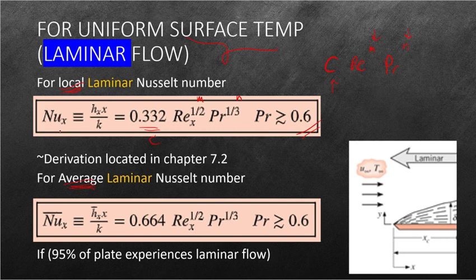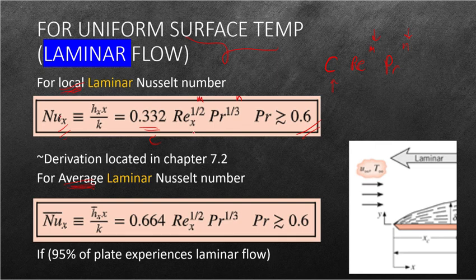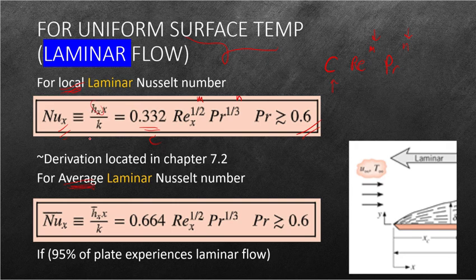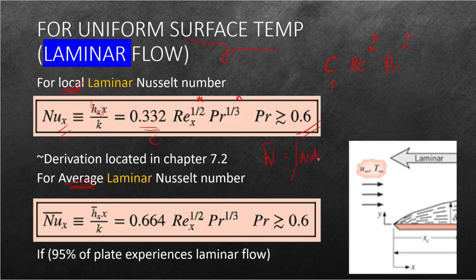So after which I have my local Nusselt number, I can now compute depending on the Reynolds number at any point along the plate, I can get my Nusselt number and my convection coefficient across any point along the plate. Now in order to get my average Nusselt number, I need to know what my local Nusselt number is and simply integrate it along the x direction.